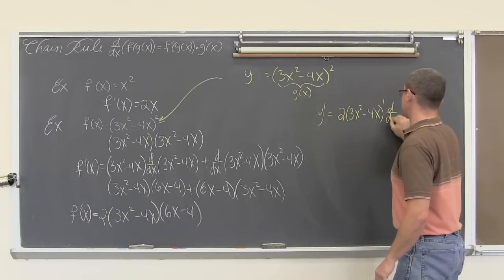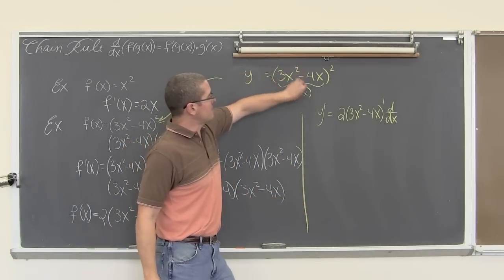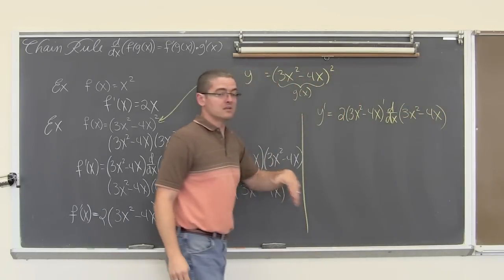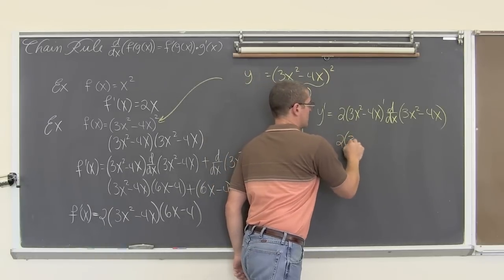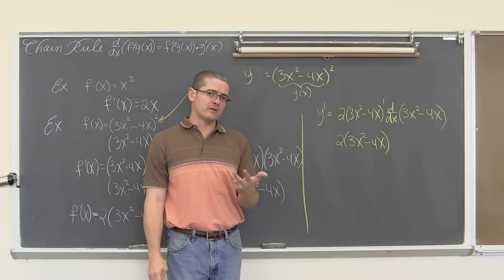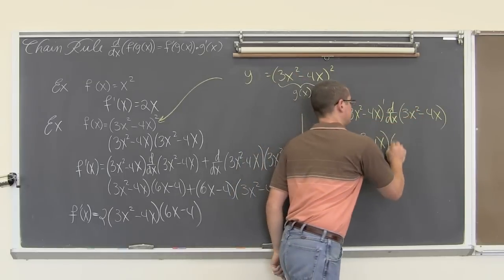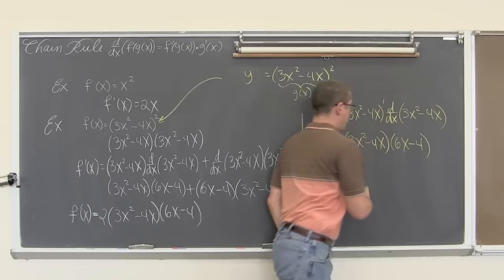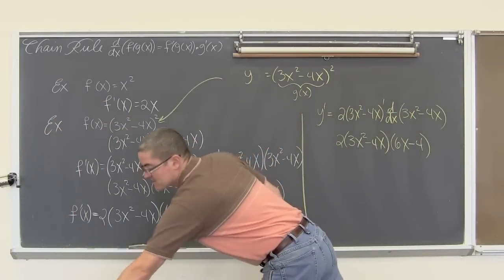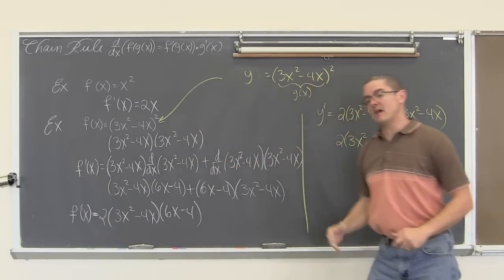I am going to write this out in tiny little steps because you are just learning it for the first time. So we are going to take that inside function out and find the derivative with respect to x of 3x squared minus 4x. So now we have 2 times (3x squared minus 4x), and we are going to find the derivative of that inside function. Using the power rule, that is going to be 6x minus 4. And voilà — it is what we got when we used the product rule. So that is validation. We found the derivative of the same function twice and got the same answer.